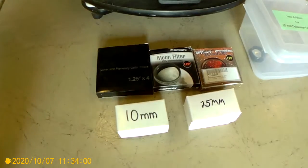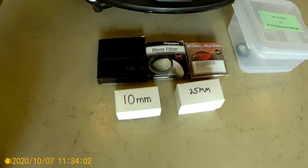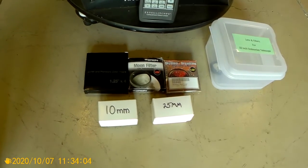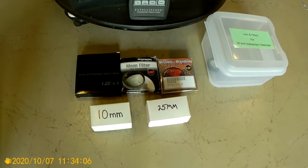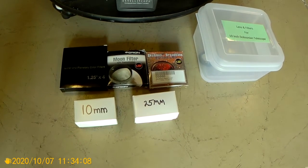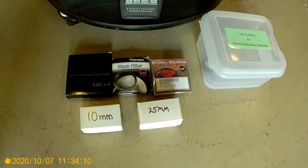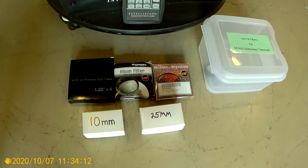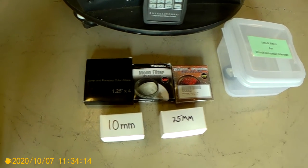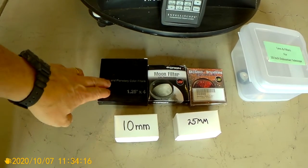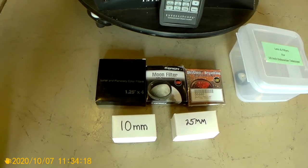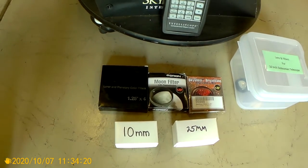And it also comes with an assortment of accessories. You've got some filters here. You've got a moon filter. You've got a sky glow broadband filter that helps block out some of the light pollution. And then you've also got a, right here, the RGB, the red, green, and blue color filters. I think there's also a yellow.